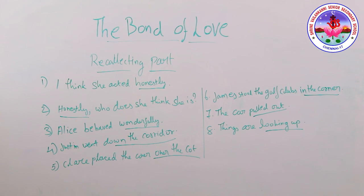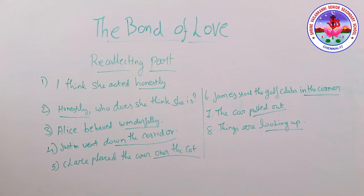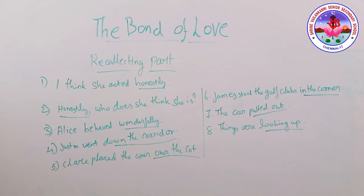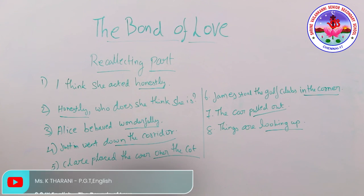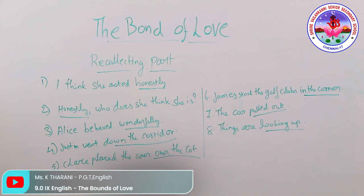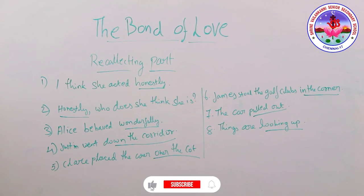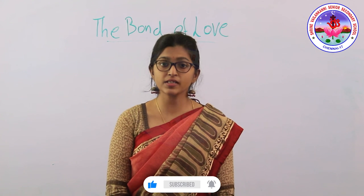For 'pulled out': if a vehicle or driver pulls out, they move onto a road or onto a part of a road where traffic is moving faster. For example: 'She just pulled out in front of me without indicating' — just moving your car out into traffic. For 'looking up': 'Things are looking up' means things are improving. So 'looking up' means improving. Hope you have understood the adverb lesson in detail. Thank you, children.